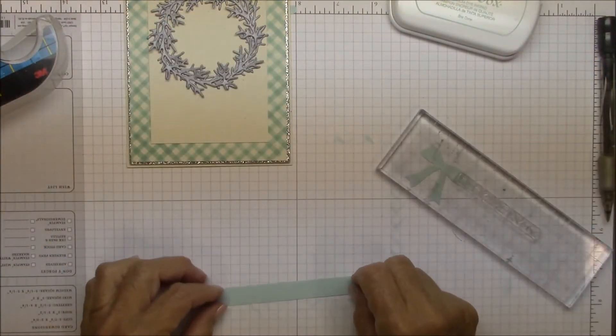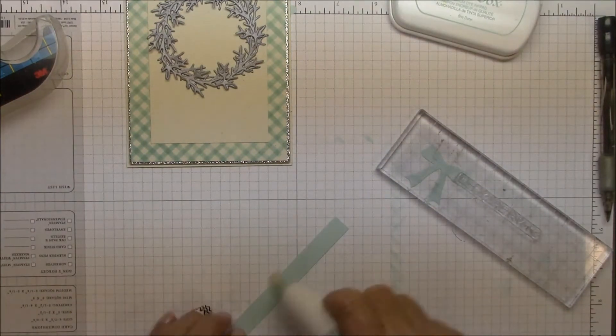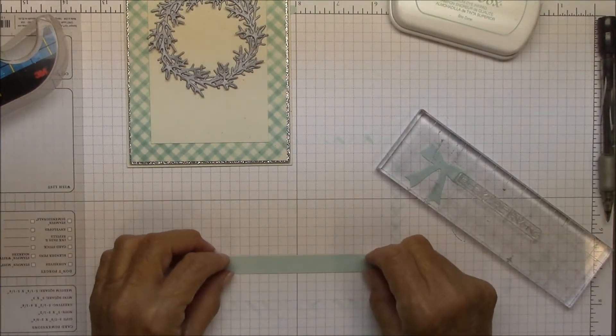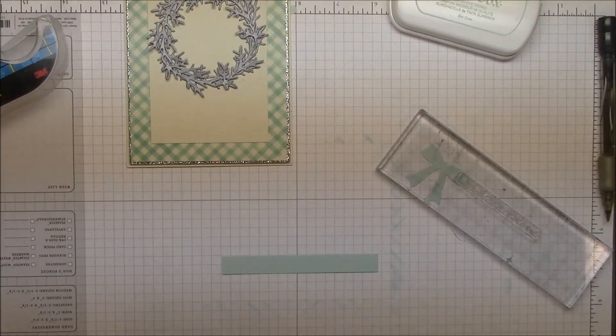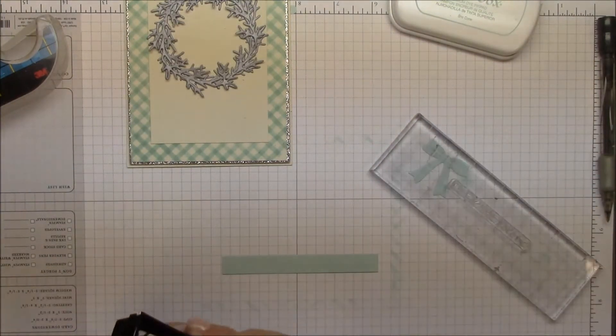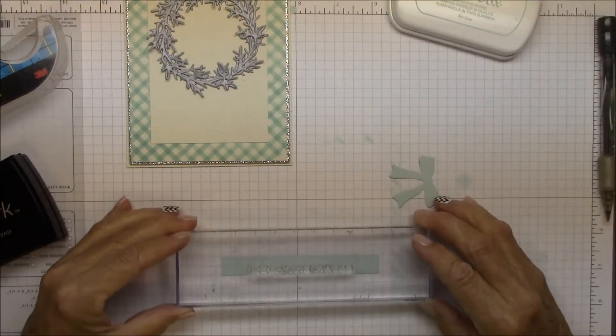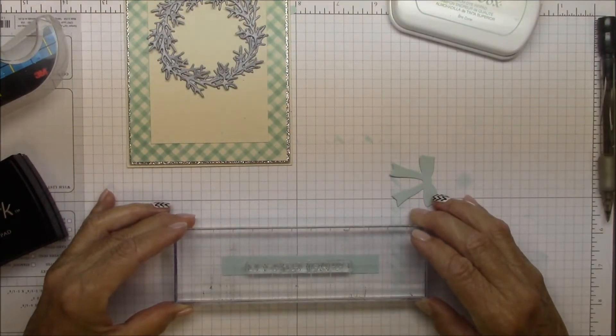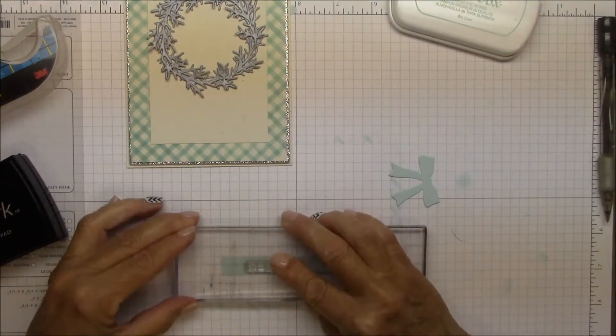Now we're going to move on to the sentiment. I'm using a sentiment from DC Ornament Banner Builder, and I'm going to emboss it with silver embossing powder. So first of all, I'm going to stamp it with Versamark on a strip of snow cone cardstock.